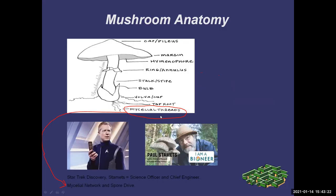Something you might find interesting — if you're Trekkie fans — there's a Star Trek Discovery TV show where the writers decided to have a character called Stamets. He's the science officer and chief engineer, and he was named after the real Paul Stamets, who is a very famous mycologist. Many of you have probably already heard of him. He's on the news frequently, a pretty interesting guy. You can look him up — he even has his own YouTube channel.